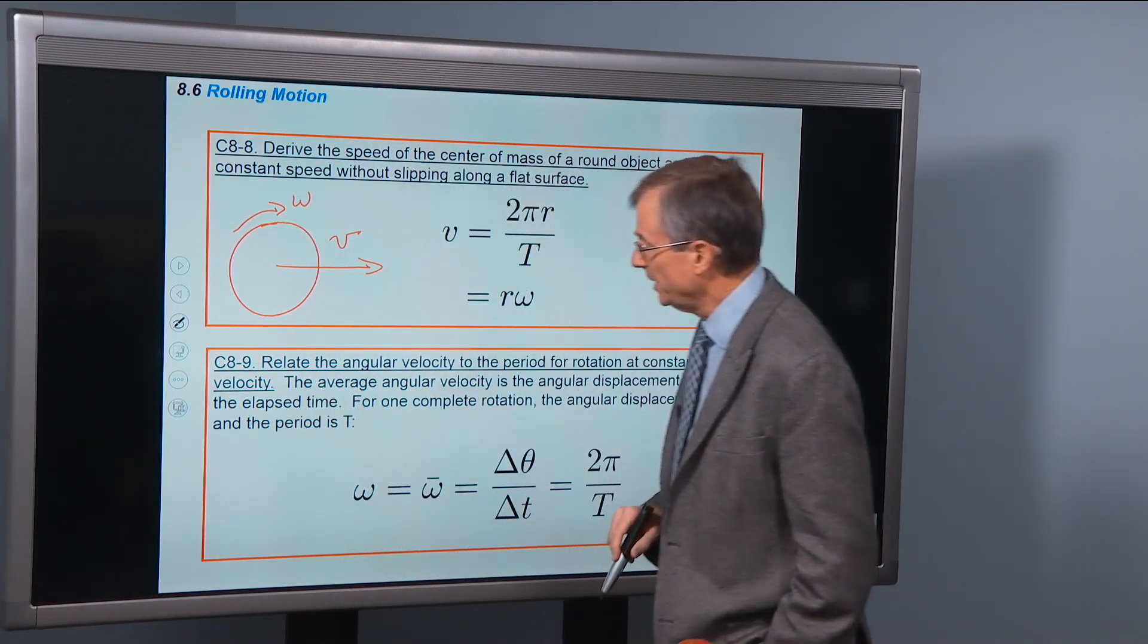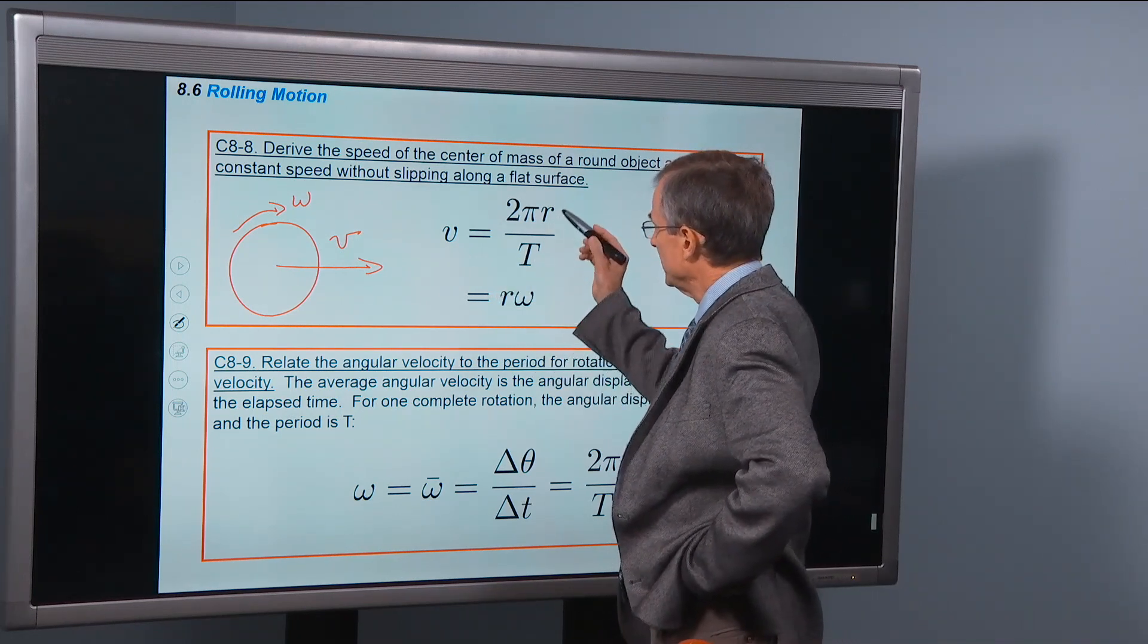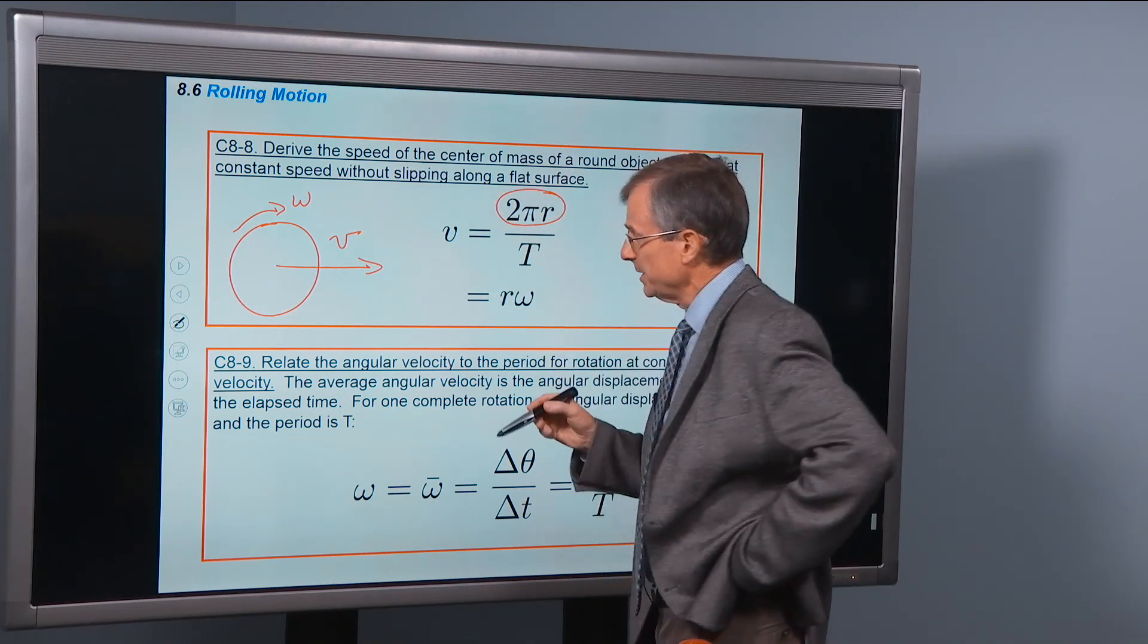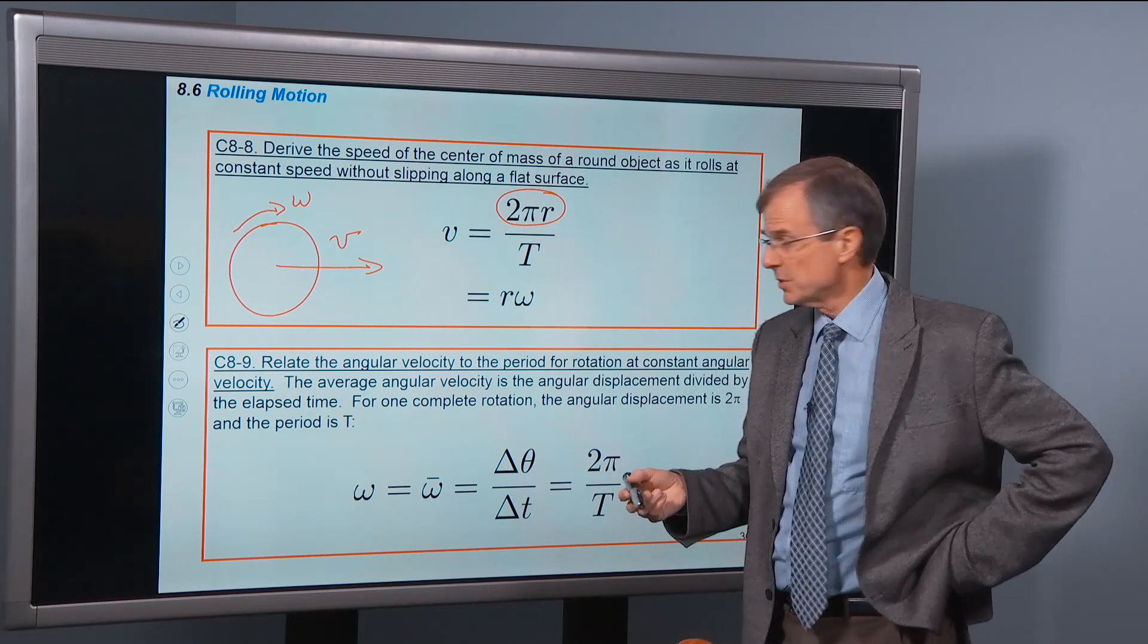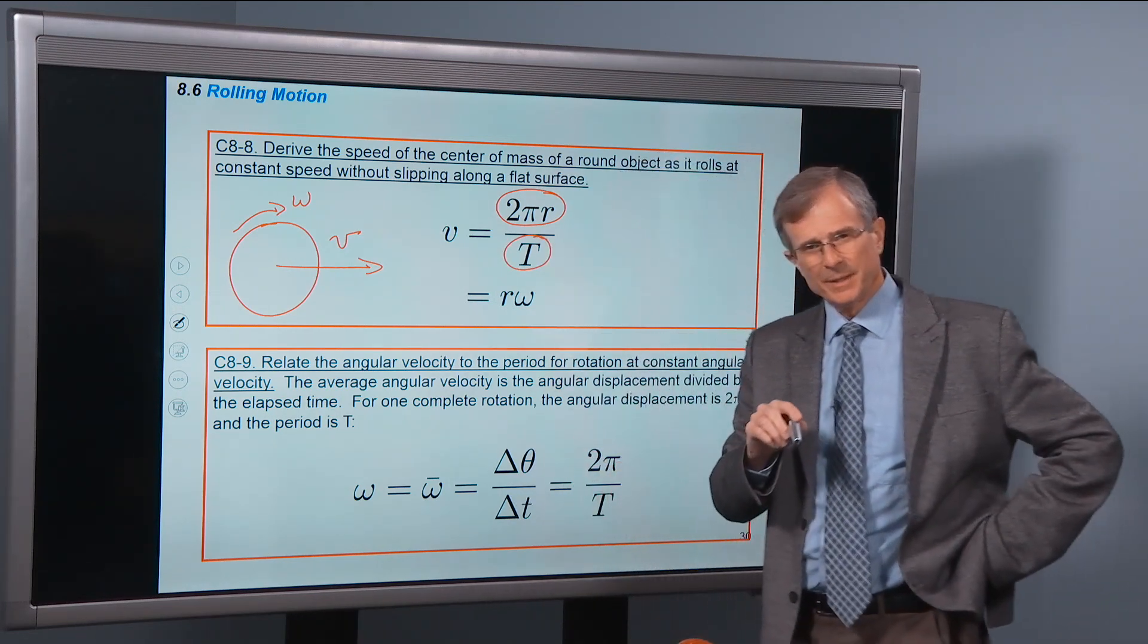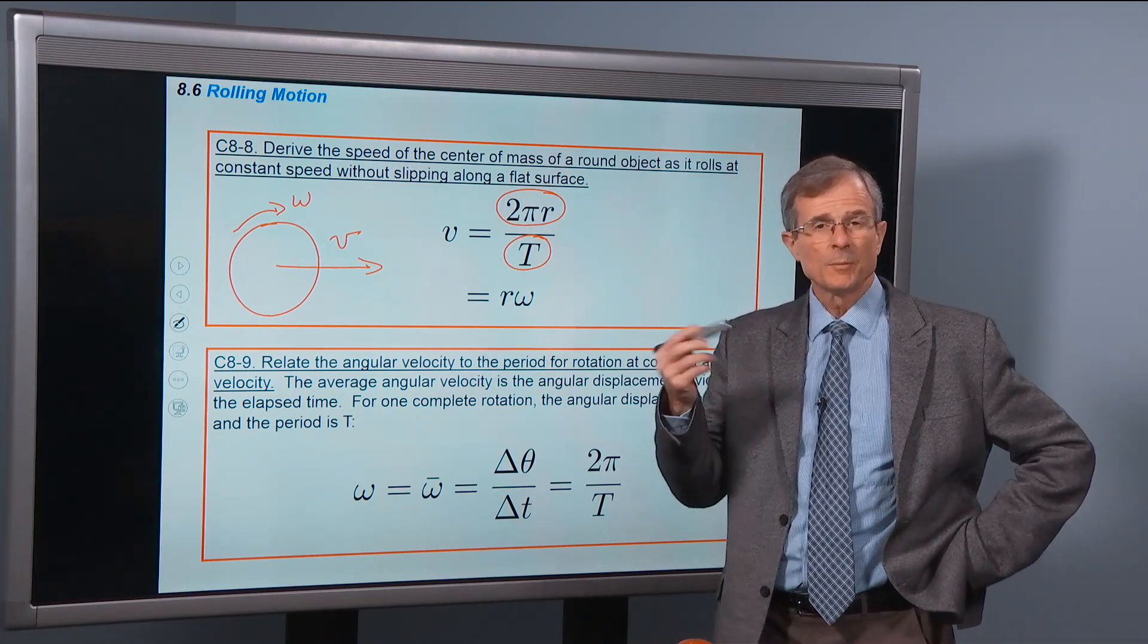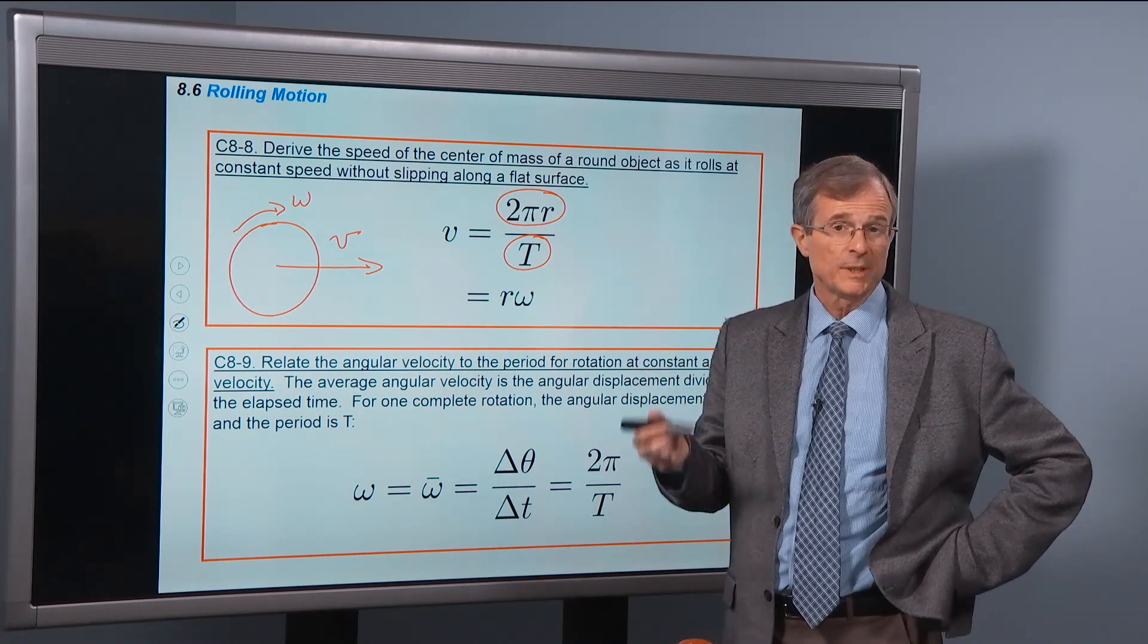And what we did in the demo video, we showed that the speed has to be the distance traveled, and that distance traveled was the circumference of the circle, divided by the time, which is called the period of motion, the time required for one complete revolution.